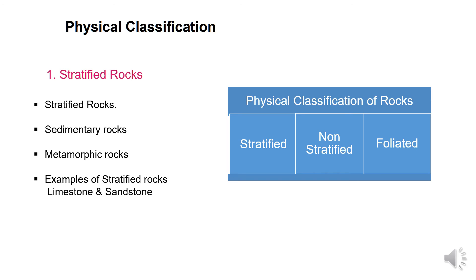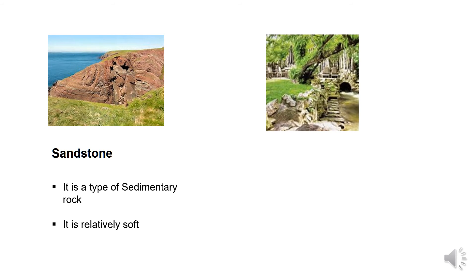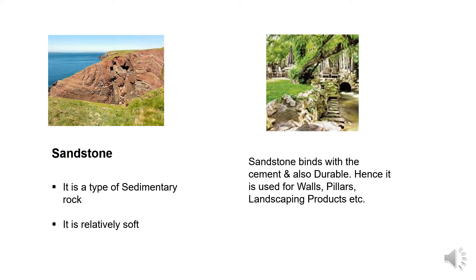Now let's see about unstratified or non-stratified rocks. Sandstone is an example of a sedimentary rock that is the stratified type. It is relatively soft. Sandstone binds with cement and is also durable, hence it is used for walls, pillars, and landscaping products.